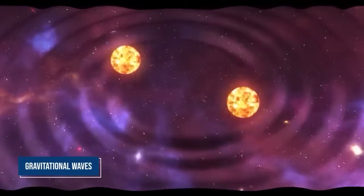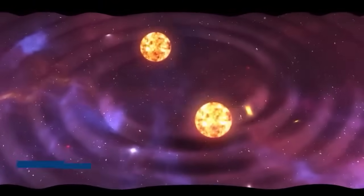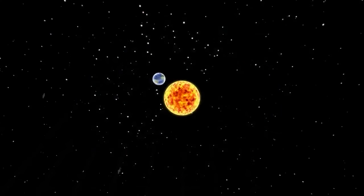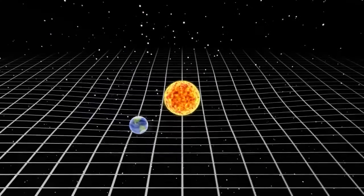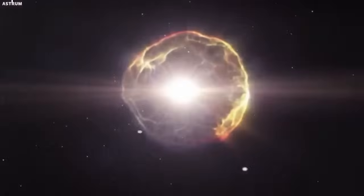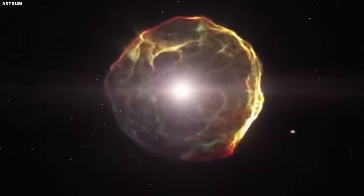Immense celestial events like supernovae are also believed to generate ripples in space-time known as gravitational waves. When we think of space, we often visualize a vast, unchanging expanse. But Albert Einstein's theory of general relativity introduced us to a concept where space isn't just a passive backdrop, it's an active participant. If Betelgeuse were to explode, it's anticipated that these gravitational waves would ripple outwards from the point of the explosion.